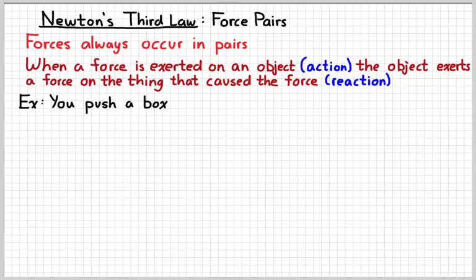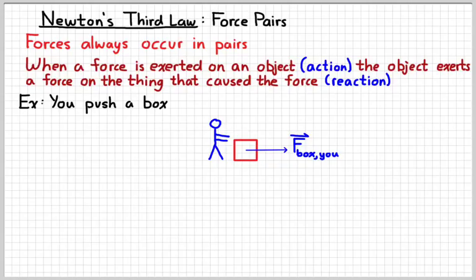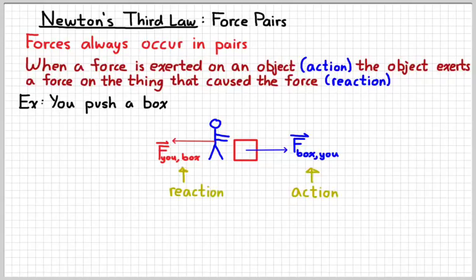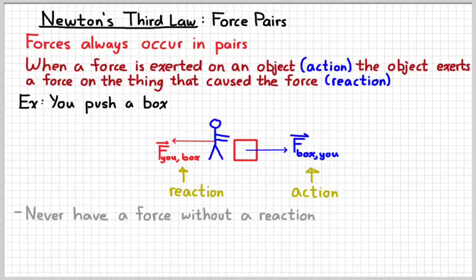For example, you might push a box — we do this a lot in physics. There's you, there's the box, and there's the force that you exert on the box. I'm going to label that F-box comma U: the force is on the box, and U are the thing causing it. The reaction to that is that the box pushes you back — F-U on the box, force on U due to the box. This is the action; this is the reaction. You can never have a force without a reaction force, so you can't ever push on a box without having the box push you back.